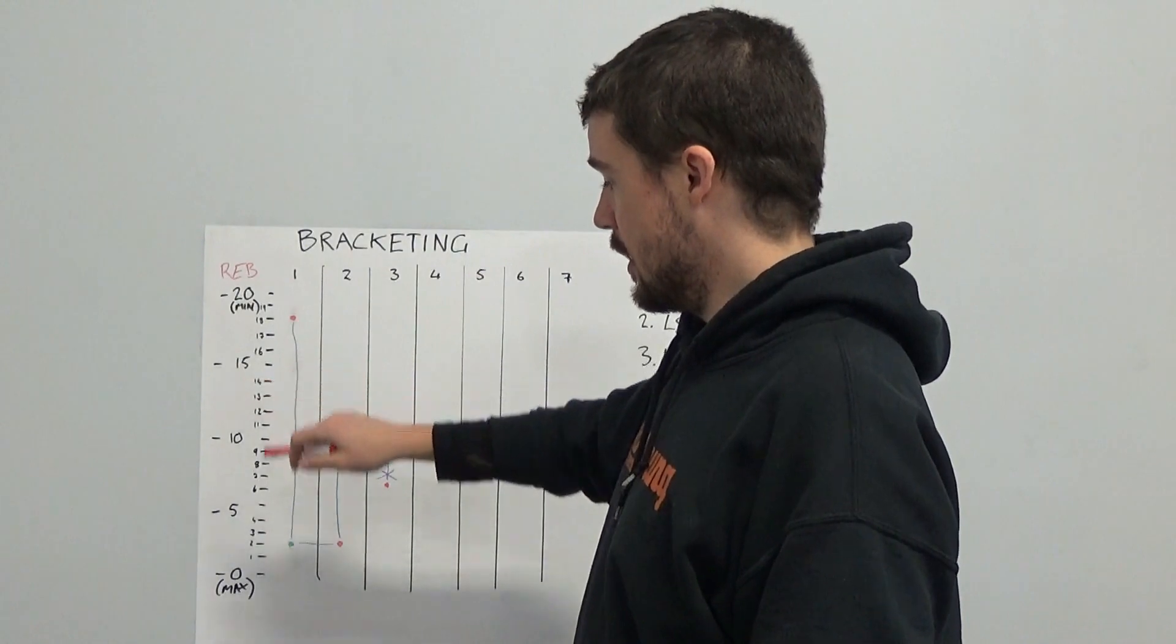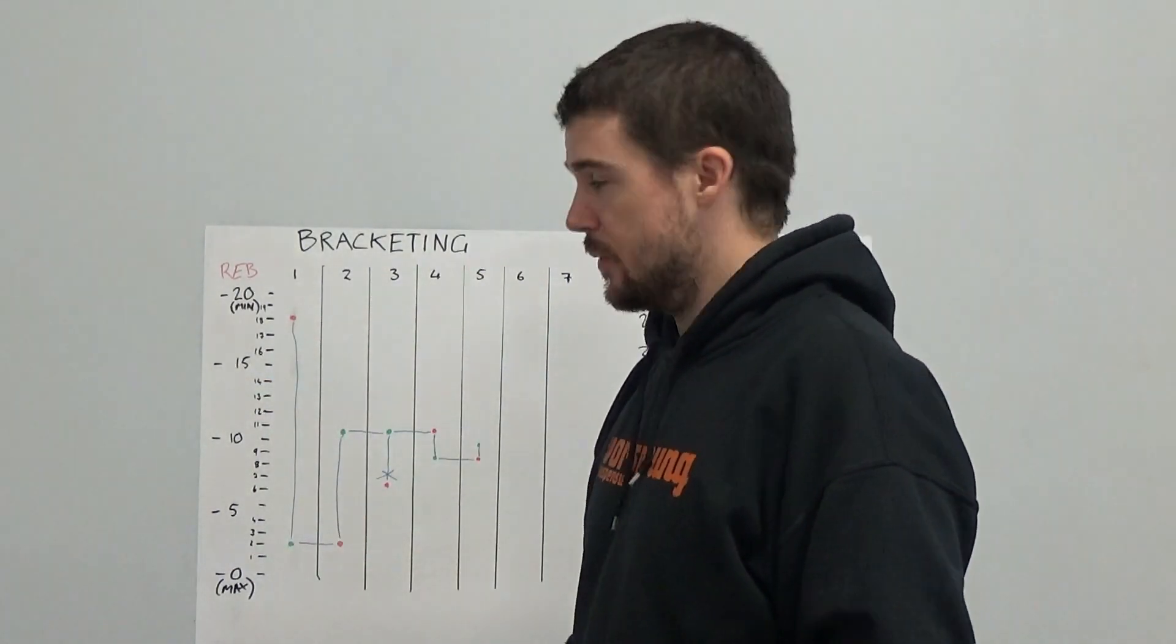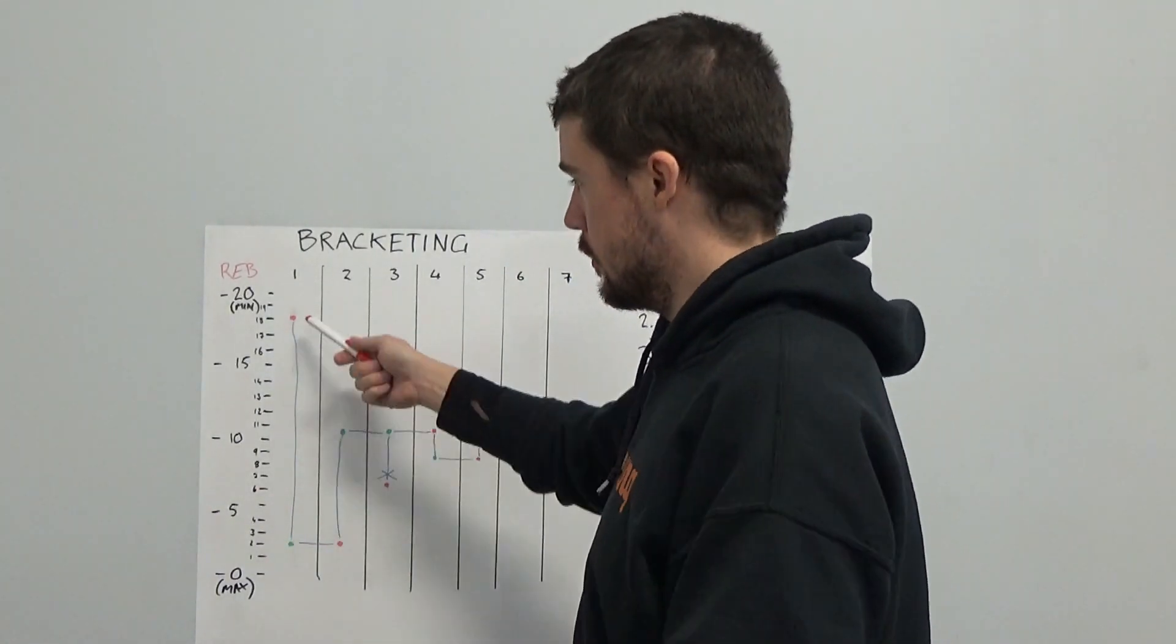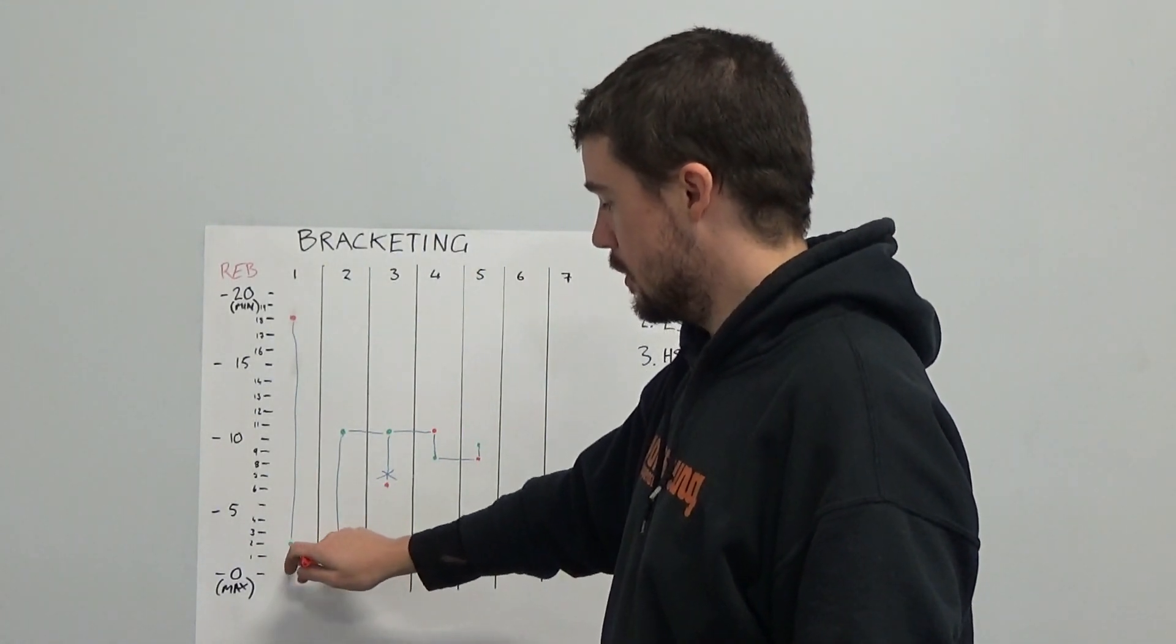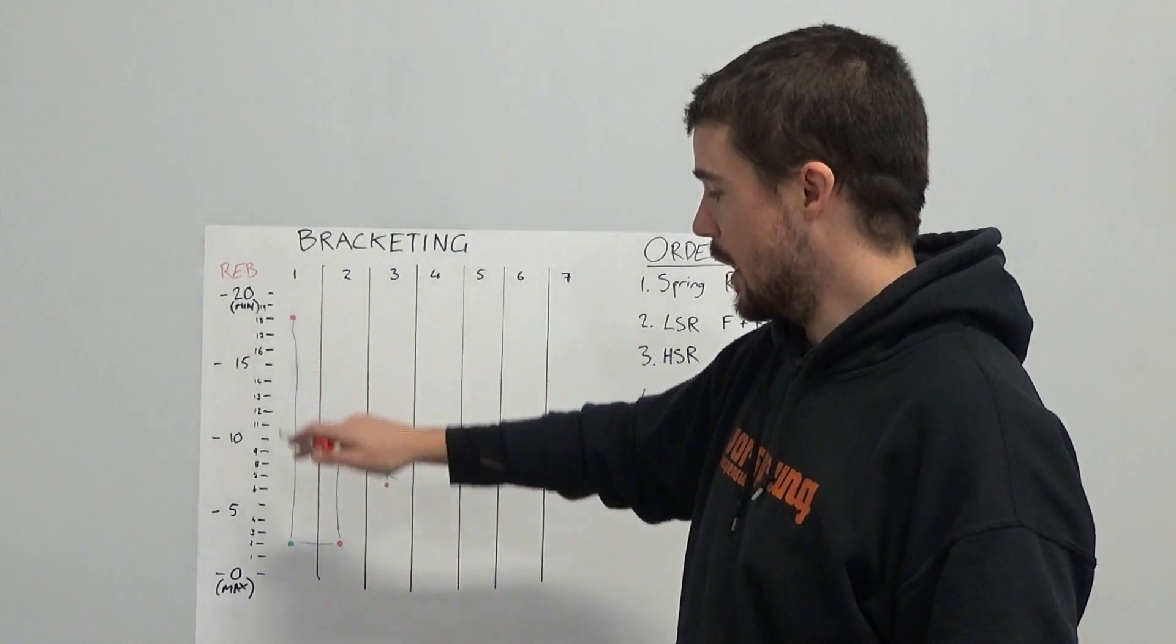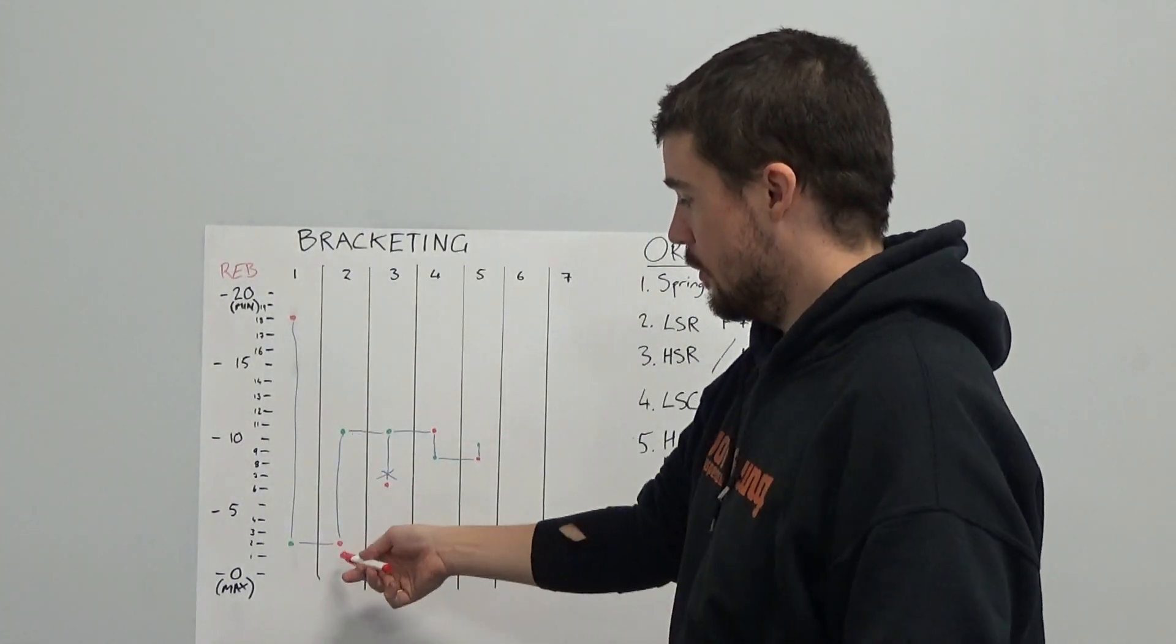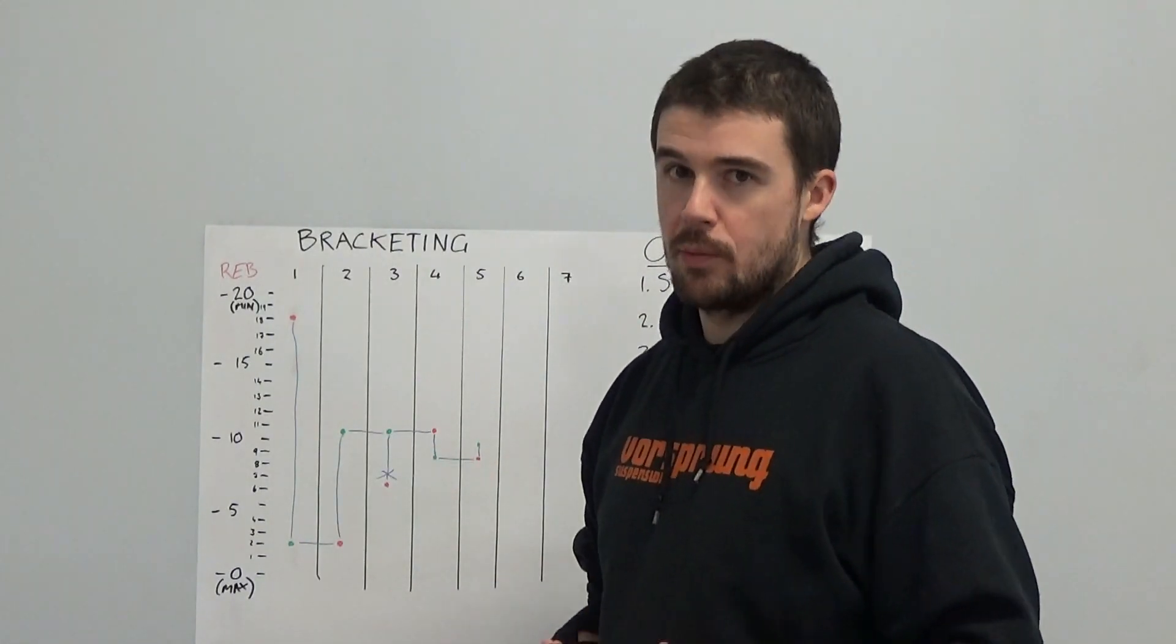So here we're starting at 18 clicks out, riding at 18 clicks out, riding at 2 clicks out. Seeing which one you like better, they're both going to suck. This is kind of the point, but one will be better than the other. So if you prefer like 2 clicks out, then we compare that to something halfway in between the two. So we go from 18 clicks to 2 clicks, halfway in between is 10 clicks out. So between 2 clicks out and 10 clicks out, we then look at what do I prefer from those two.